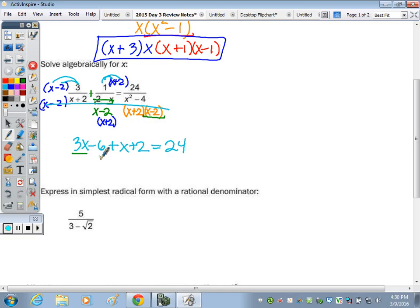Now I can cross it off. So 3x minus 6 plus x plus 2 equals 24. I want to combine 3x and x to get 4x, negative 6 plus 2 is a negative 4, equals 24, add the 4 over, and 4x equals 28, divide by 4, and x equals 7.